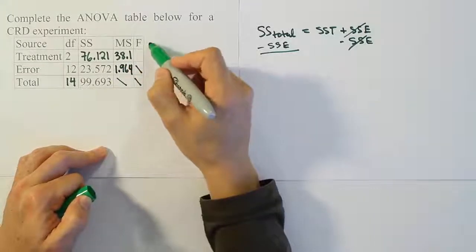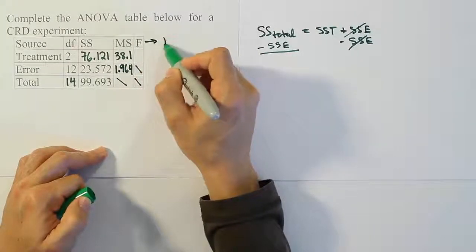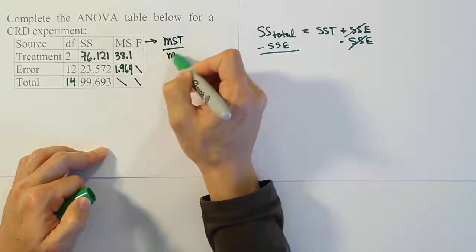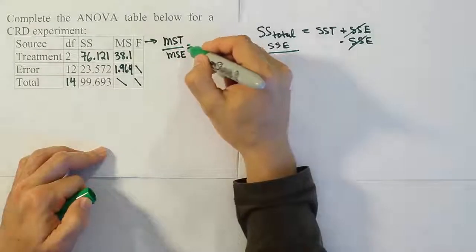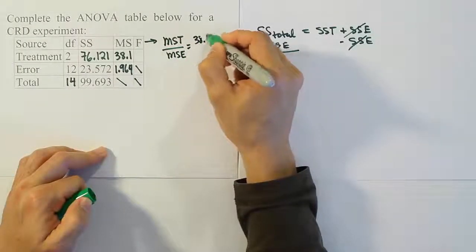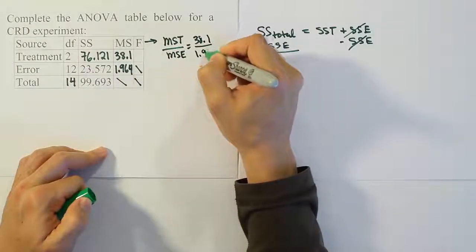And finally, to fill in this F value, we have to remember that it's MST over MSE. So, for us, that's going to be 38.1 divided by 1.964.